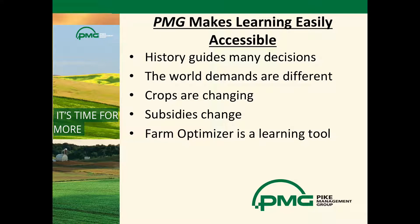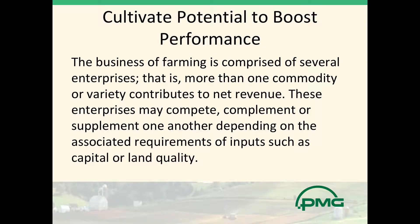Our Farm Optimizer tool is designed to give you the opportunity to learn what works and what doesn't work on your farm — with your cost structure — and how to adjust that cost structure. We want to cultivate the potential to boost performance on your farm. You should look at each crop and each variety in many cases as a separate enterprise, because it has a different set of inputs, different yields, and different revenues. You need to look at these things individually and independent of each other.